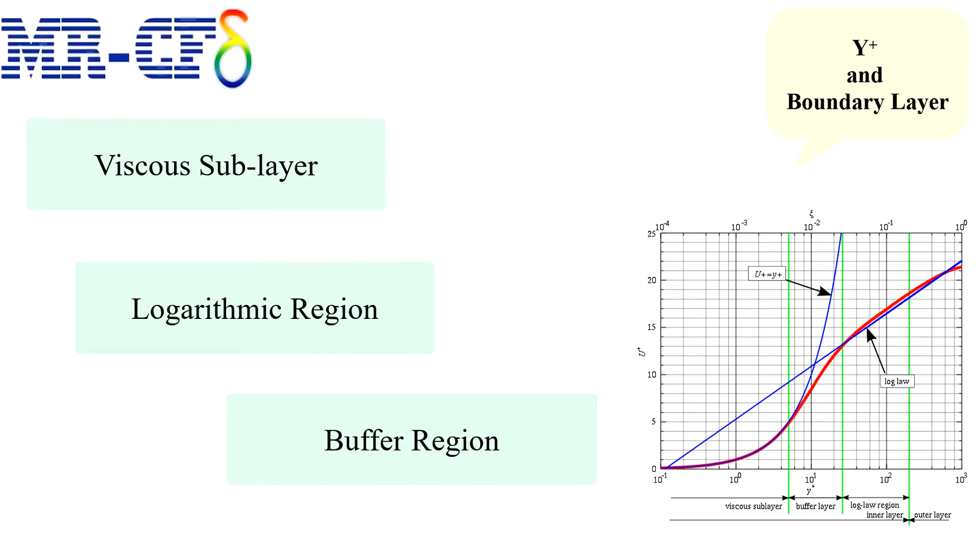It is a result of dimensional analysis to provide self-similar solutions to the turbulent boundary layer profile. The turbulent boundary layer consists of three layers: viscous sublayer, logarithmic region, and buffer region.